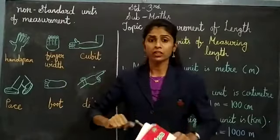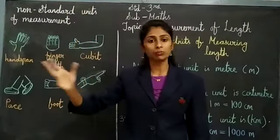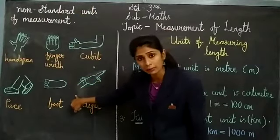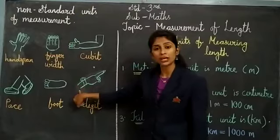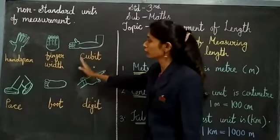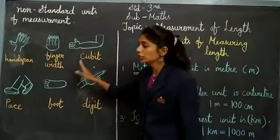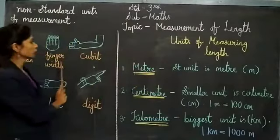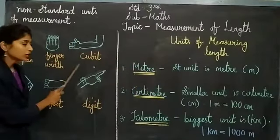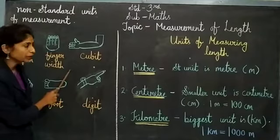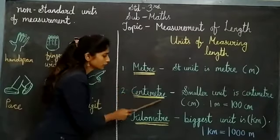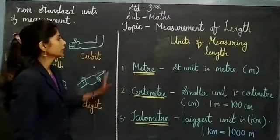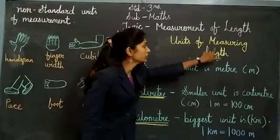It depends upon person to person. If the person is fat, healthy, or tall, then the measurement will come different. Therefore, we cannot rely on this kind of measurement. This was the first part of your chapter — non-standard units. Now let us move to standard measurement, because we cannot rely upon non-standard measurement. We have some kind of measurement that we call standard units of measurement, and here we are going to learn units of measuring length.